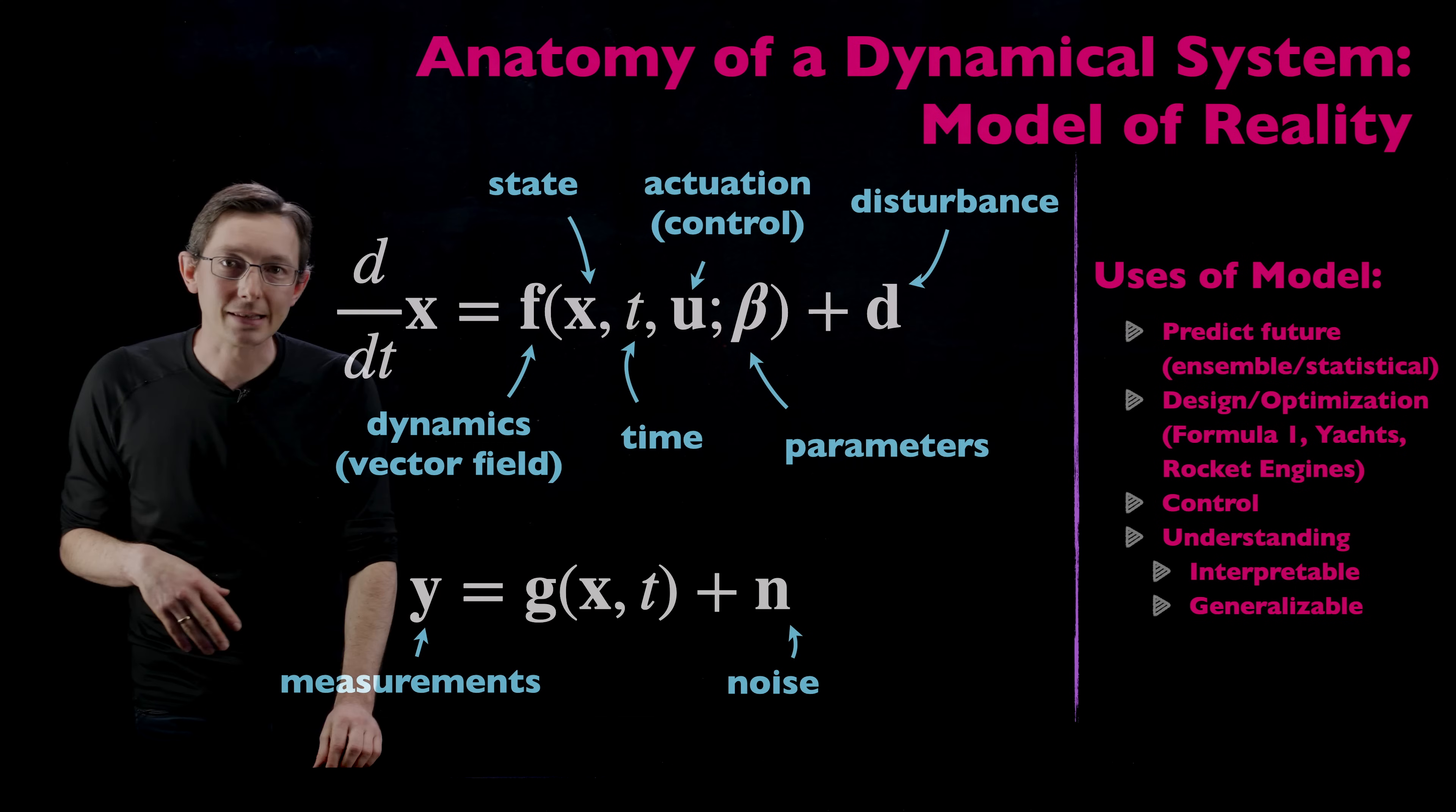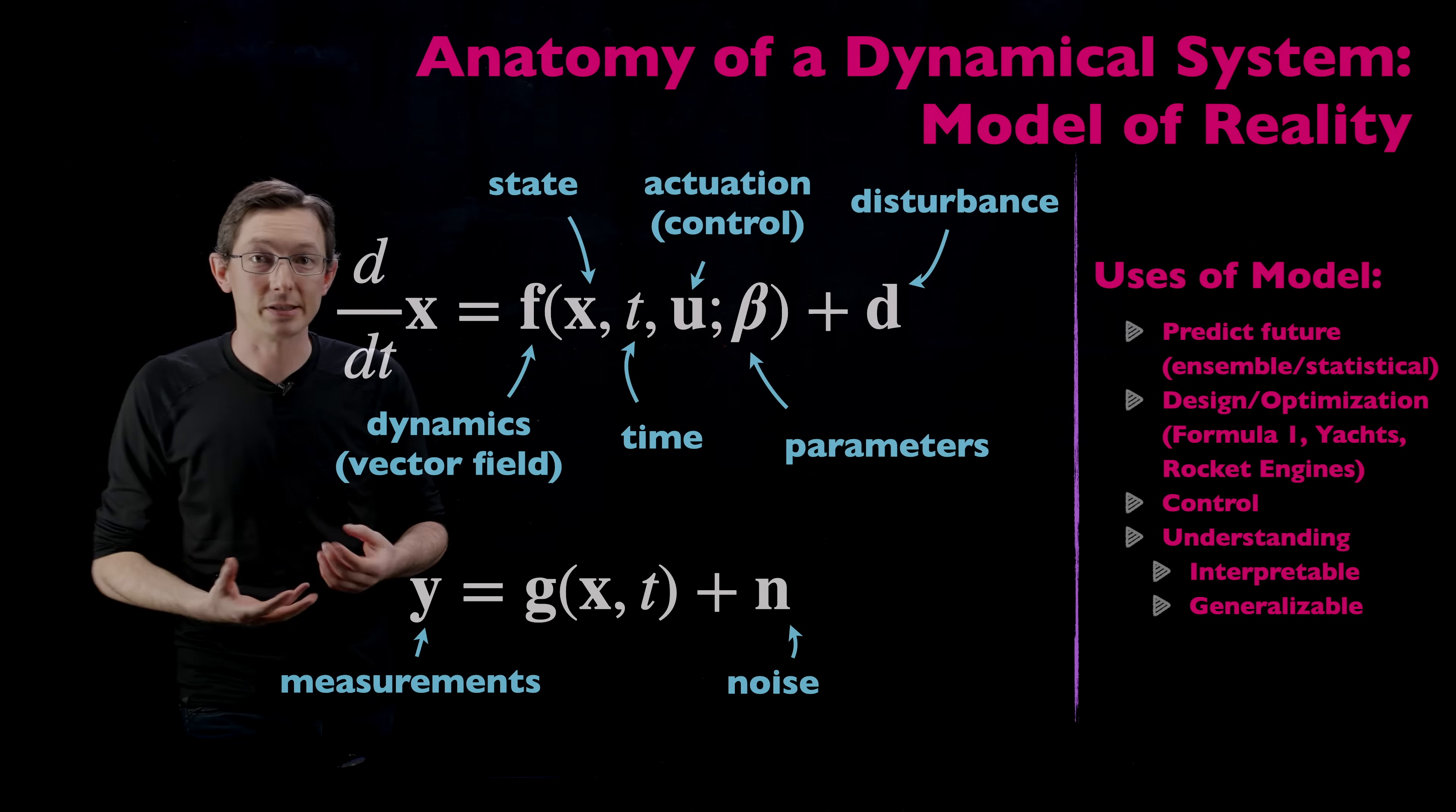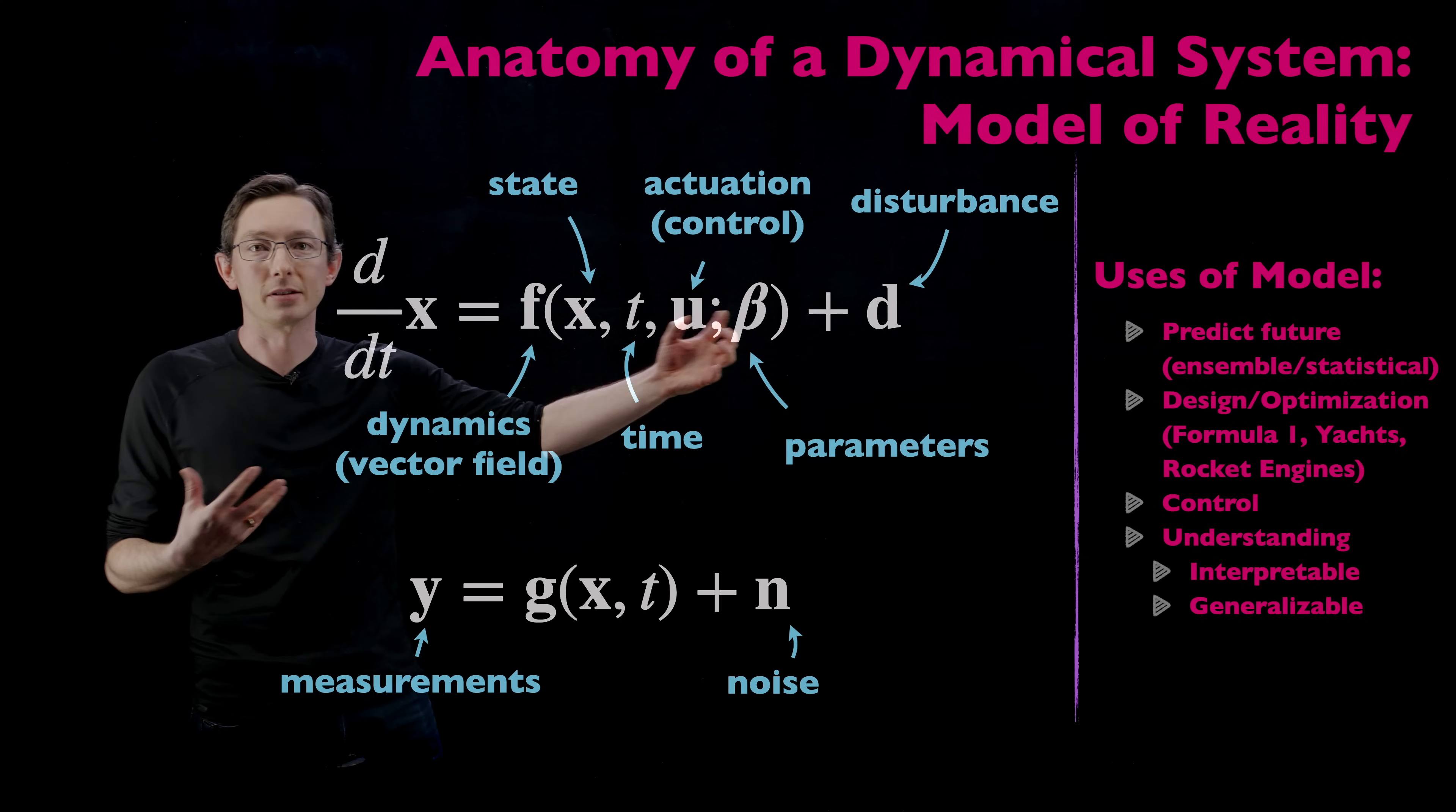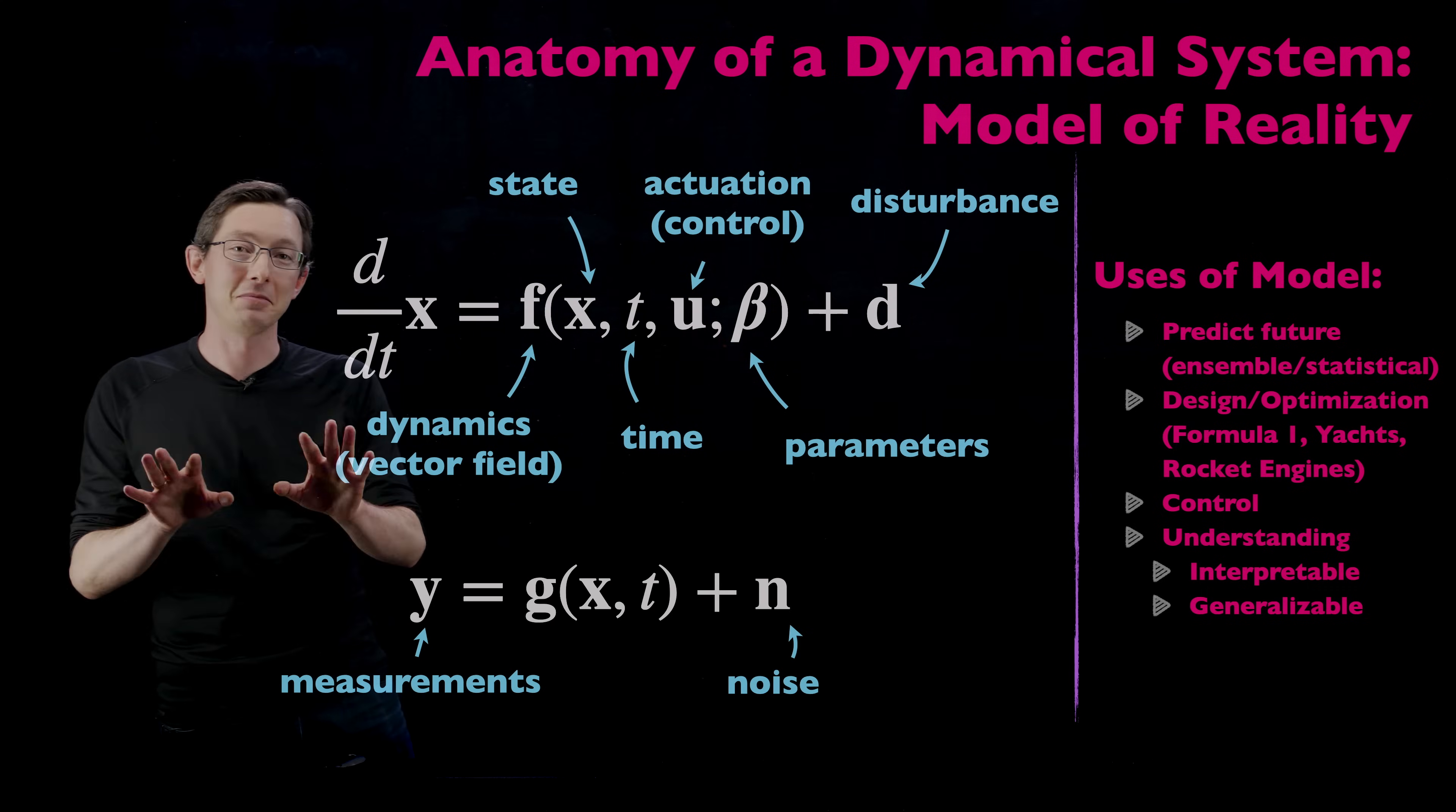That's the overview of the anatomy of a dynamical system. I strongly encourage you to start playing around with systems yourself. Pick a system that you're interested in. The brain or an epidemiological system or the climate. Pick something interesting and start thinking to yourself. What would be a state vector of that system? What would be the control inputs and the parameters? What might be some rules for how that system evolves in time? What can I measure? And start thinking about how those challenges and these uses fit into your understanding of your dynamical system. All right, thank you.